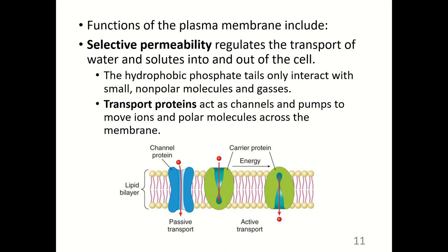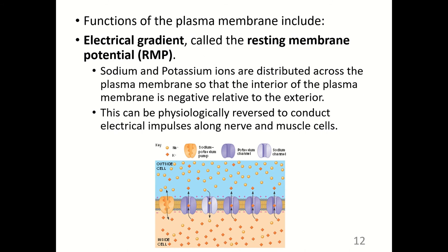Functions of the plasma membrane include selective permeability, which regulates the transport of water and solutes into and out of the cell. The hydrophobic phospholipid tails only interact with small, nonpolar molecules and gases. Transport proteins act as channels and pumps to move ions and polar molecules across the membrane. Another function is an electrical gradient called the resting membrane potential, abbreviated RMP. Sodium and potassium ions are distributed across the plasma membrane so that the interior is negative relative to the exterior, which can be reversed to conduct electrical impulses along nerve and muscle cells.